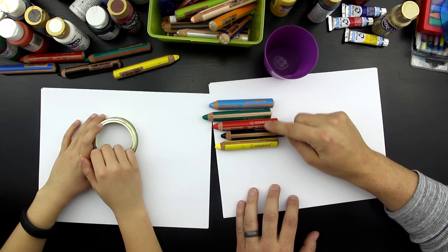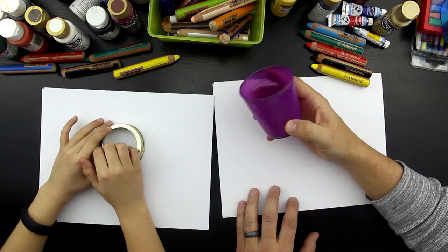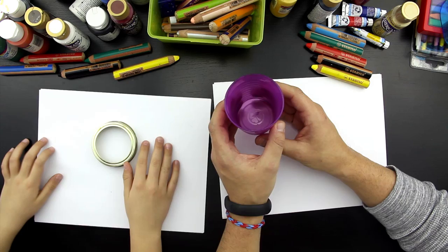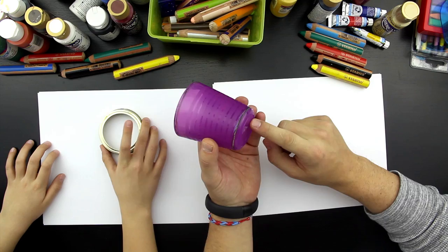All right, and we're also going to use a circle or a template that we could use for the rings. I'm going to use a cup, and the cool thing about a cup is that there's a big side and a small side. You're going to use the lid to a mason jar, huh?